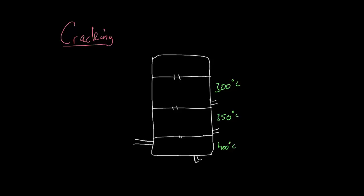Let's say that we start at 400 degrees Celsius down the bottom — the crude oil is going to be coming in from here, from the furnace, and most of it will turn into a gas and rise up the column. However, some remains as a liquid because its boiling point is even above 400 degrees Celsius, and it's a thick gloopy liquid as a result, coming out the bottom. One example of that is paraffin, or paraffin wax.